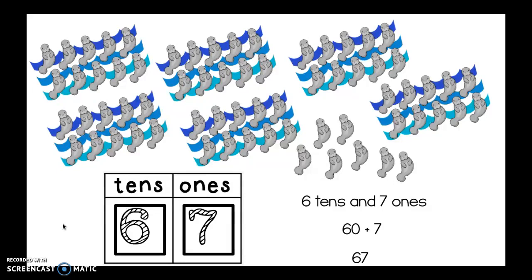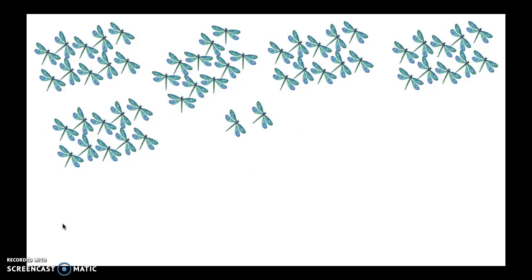Friend, you're doing such a good job. I'm so proud of you. Let's keep cruising. What about this group of animals? Ooh, dragonflies. Now, a group of dragonflies is actually called the cluster. Let's see if we can figure out how many dragonflies are in this cluster.